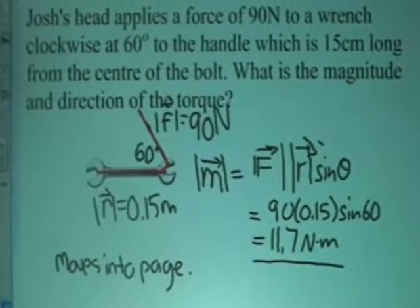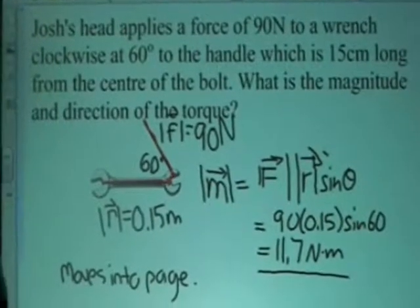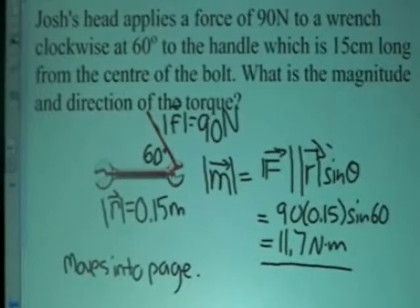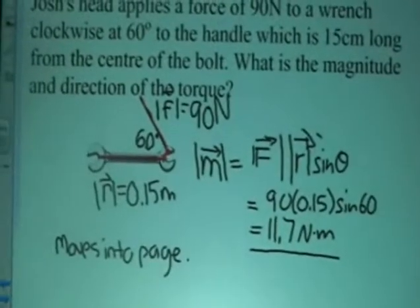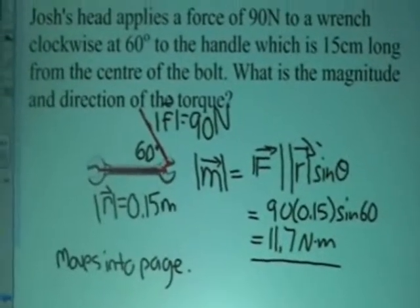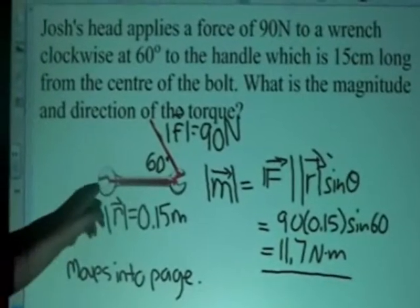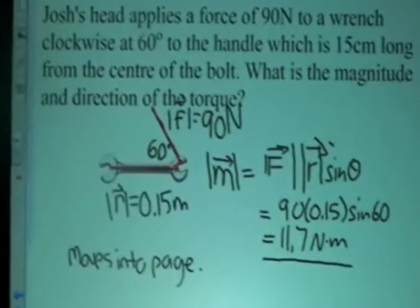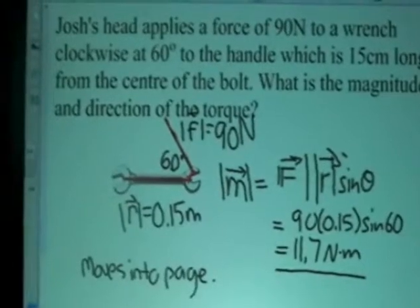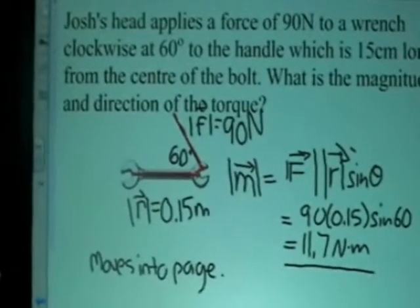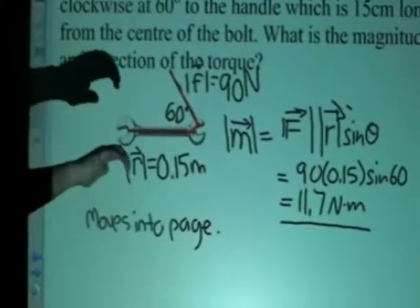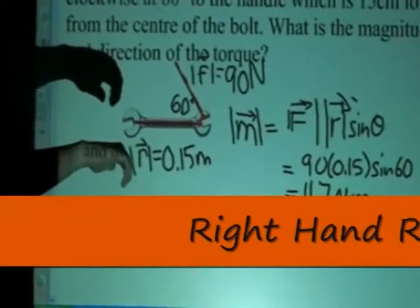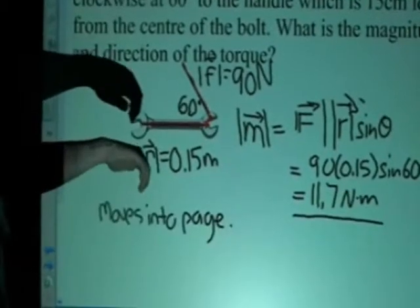Josh's head applies a force of 90 newtons to a wrench, clockwise at 60 degrees to the handle, which is 15 centimeters long from the center of the bolt. What is the magnitude and direction of the torque? So to find torque, you take the magnitude of the force multiplied by the magnitude of R, which is the distance from the bolt to the end of the wrench, and multiply that by sine theta. So then that equals 90 newtons multiplied by 0.15 meters times sine of 60, and that equals 11.7 newtons times meter. Because it's moving 60 degrees clockwise, that means that you curl your fingers, and the direction your thumb is pointing is the direction that the screw is going to be moving, or the bolt. That means that the bolt will be moving into the page.